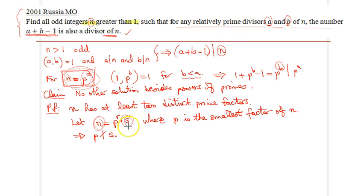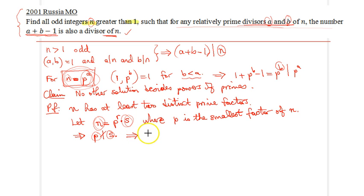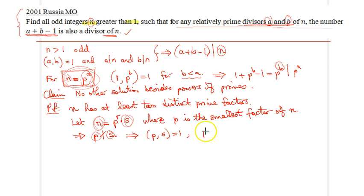Because our number n satisfies the conditions, and because p and s are relatively prime, they satisfy the condition of the problem. Therefore, p plus s minus 1 divides n.